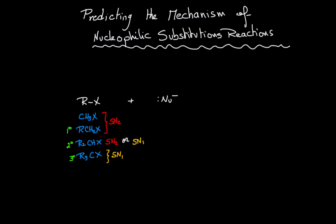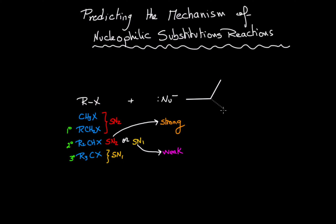For a second degree alkyl halide, we should look at the strength of the nucleophile. The nucleophile can be either a strong nucleophile or a weak nucleophile. A strong nucleophile will favor the SN2 mechanism, while a weak nucleophile will favor the SN1 mechanism. Therefore, if I have a second degree alkyl halide with a strong nucleophile, the mechanism will be SN2. However, if I have a second degree alkyl halide with a weak nucleophile, the mechanism will be SN1.